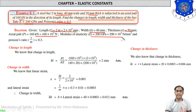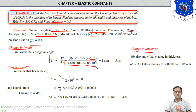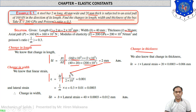First, find change in length using delta-l equals PL by A. P is given, length is given, and cross-section area for a rectangular body is width into thickness: 40 × 20. Young's modulus is given. By substituting and simplifying, delta-l equals 2 mm. Now for change in width, we first find linear strain: epsilon equals delta-l by l equals 2 / 2000 equals 0.001.